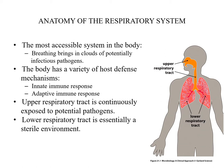The lower respiratory tract is essentially a sterile environment, while the upper respiratory tract is not sterile. The upper respiratory tract has microbiota or normal flora that live in harmony with the human body. These organisms mostly do not cause harm to carriers, but can be transmitted to others on contact. We will discuss the types of normal flora present in the upper respiratory tract in the coming slides.